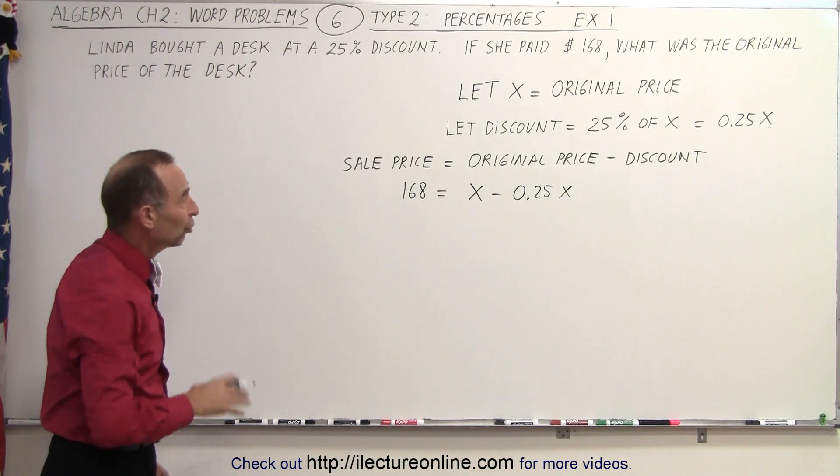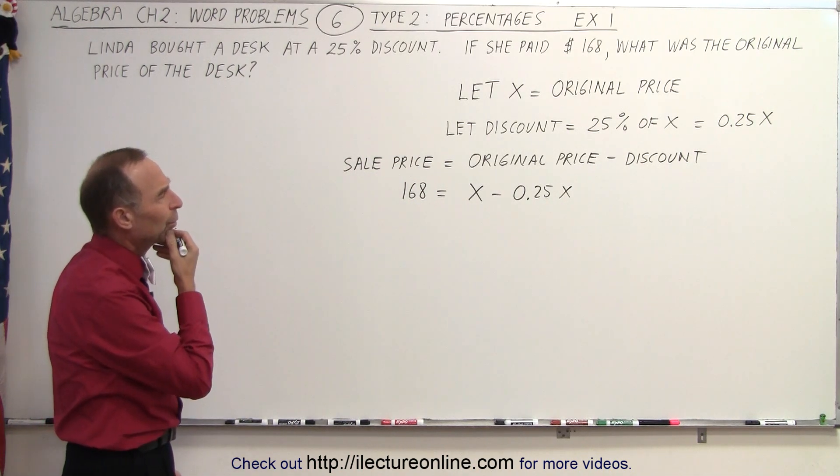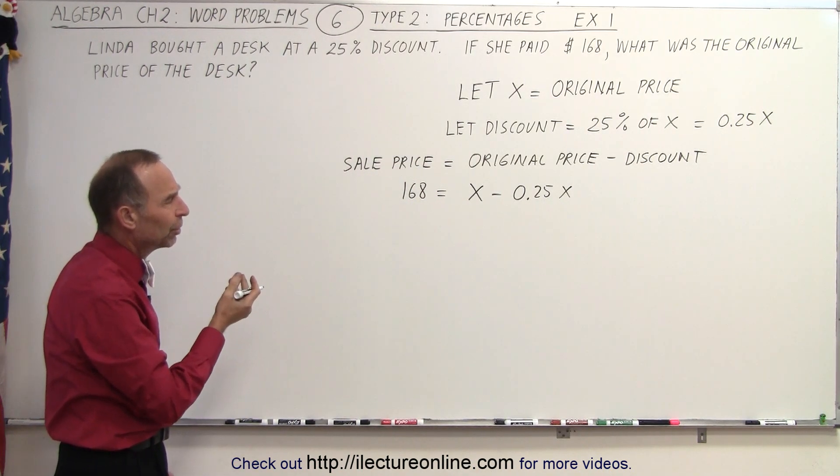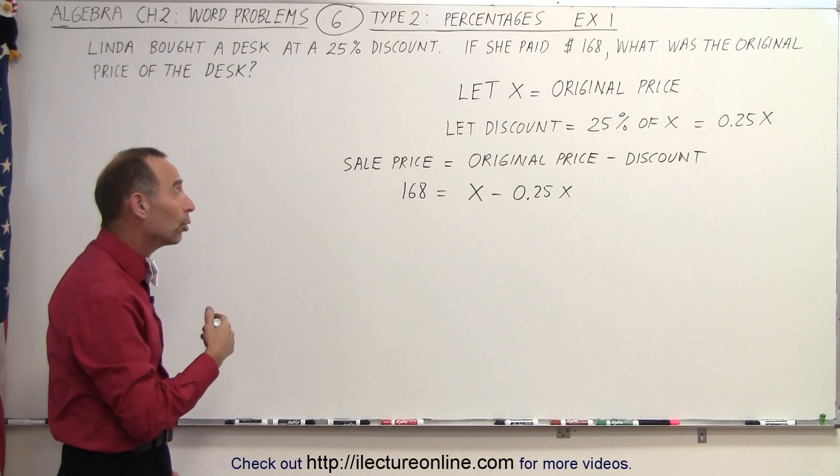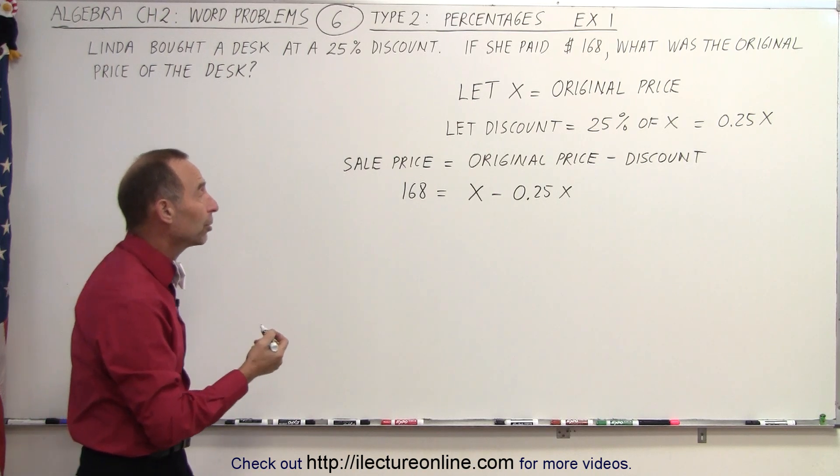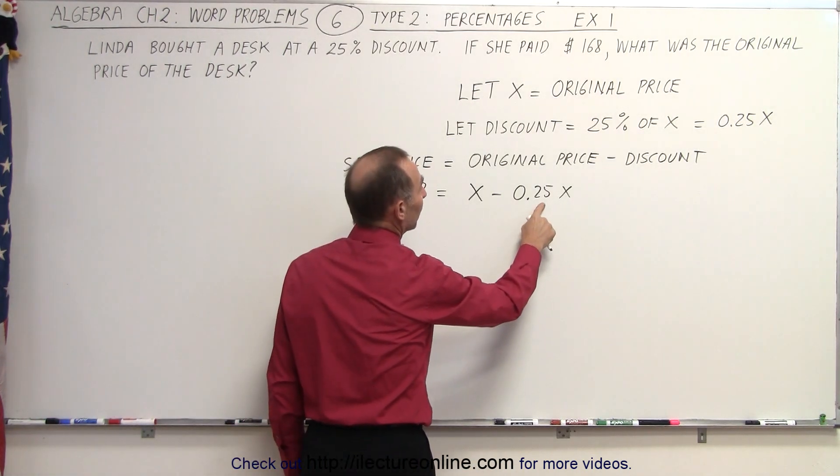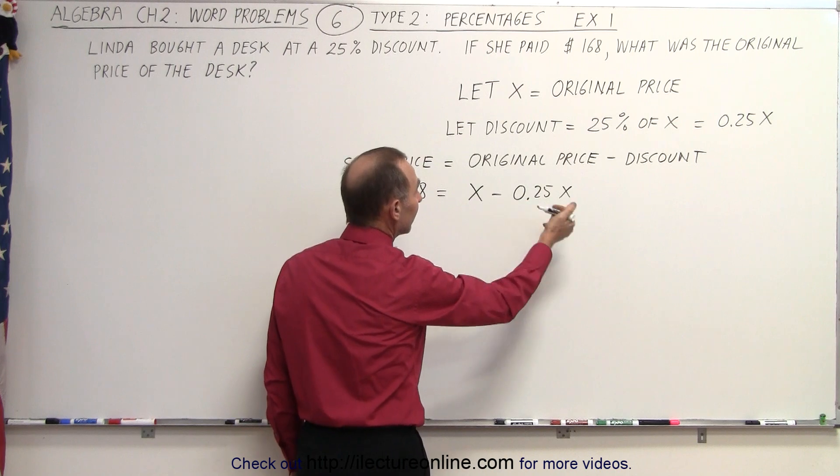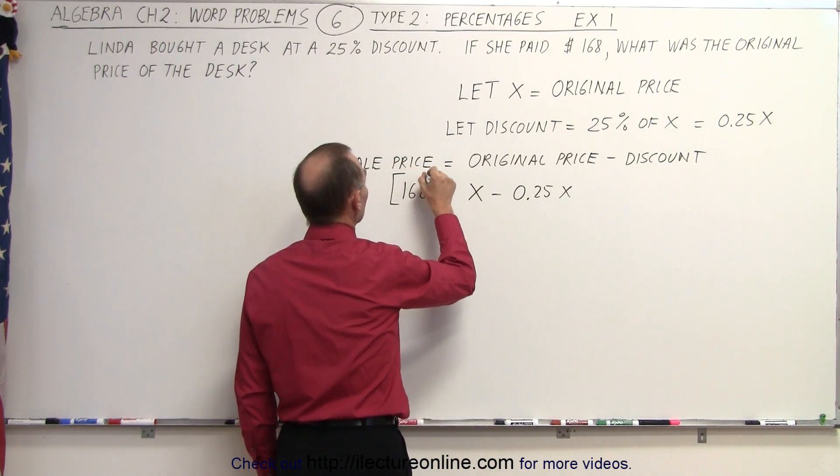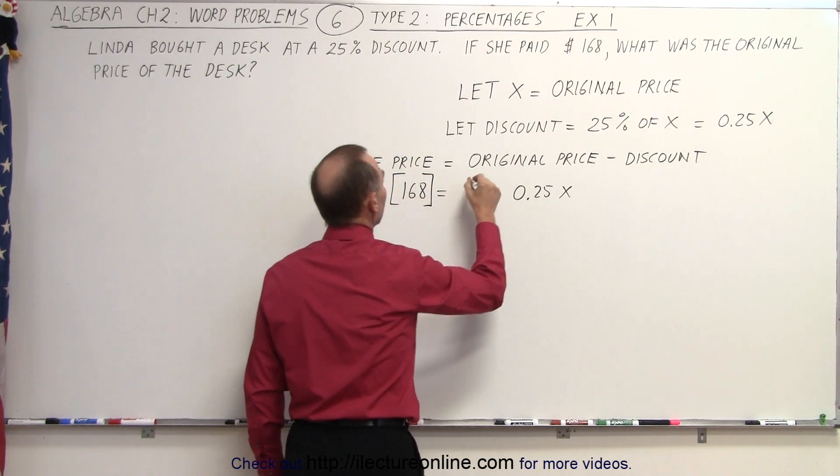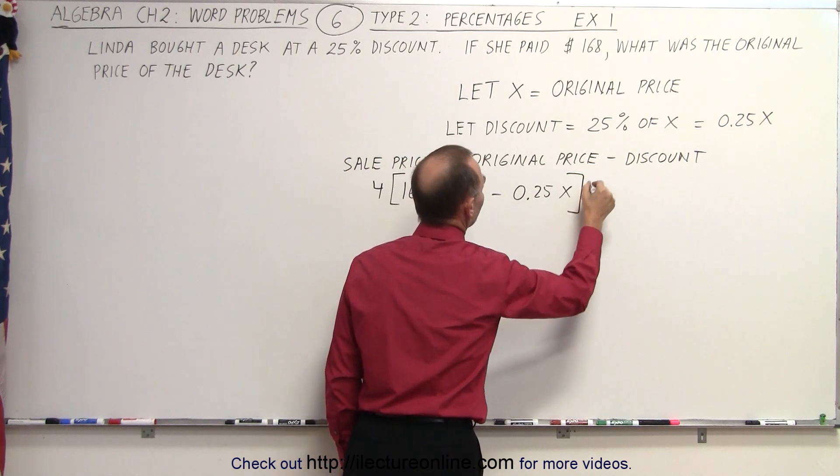Now we're ready to solve for x. So what we need to do is first get rid of the decimal. We can do that by multiplying by 100, or to keep the number smaller, we might be able to keep it simple by multiplying both sides by 4, because 4 times a quarter gives me 1 and the decimal would disappear. So I'm going to multiply the left side by 4 and I'm going to multiply the right side by 4.